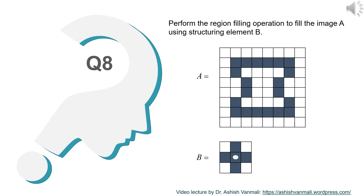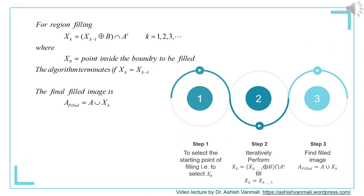Let's take another example of region filling. The question is again to perform the region filling operation to fill image A using structuring element B. There is an 8x8 image given, which is something like a pattern of I, and the structuring element is the same as the previous problem. The formulation has three steps: select the starting point X_0, perform the iterative dilation and intersection until convergence, and then find the final filled image as A union X_K.